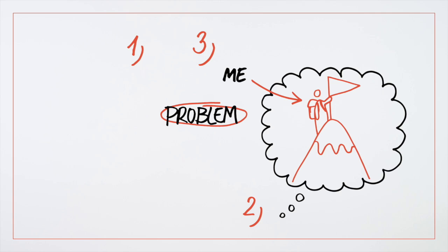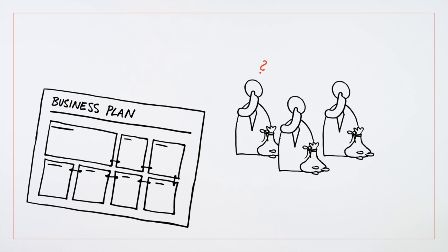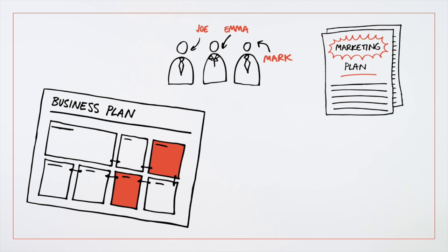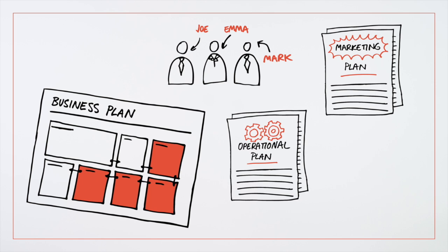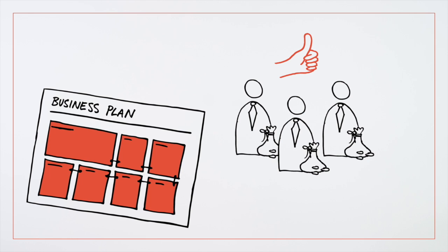A business plan is a structured way to capture this information. It should cover everything a funding partner might be interested in. An introduction to your management team, a marketing plan, and an operational and financial plan. This way they can be confident about where their money will go.